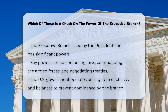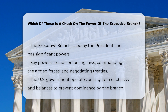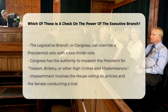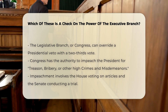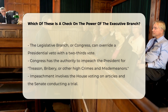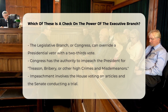Legislative checks. The legislative branch, composed of Congress, has several mechanisms to check the executive branch. Congress can override a presidential veto with a two-thirds vote in both the House and Senate, allowing them to pass legislation despite the president's disapproval. Congress also has the power to impeach and remove the president and other civil officers from office for treason, bribery, or other high crimes and misdemeanors. This process involves the House of Representatives voting on articles of impeachment, and the Senate conducting a trial to determine removal.